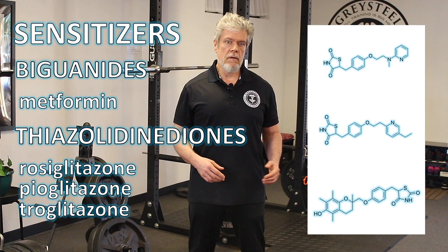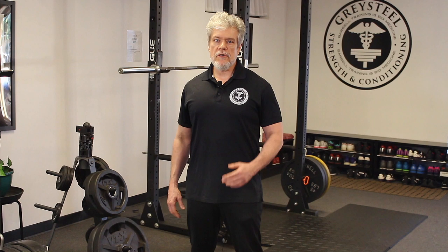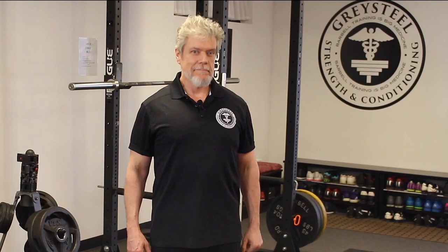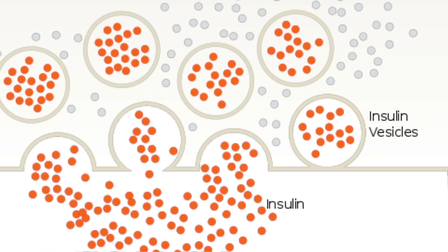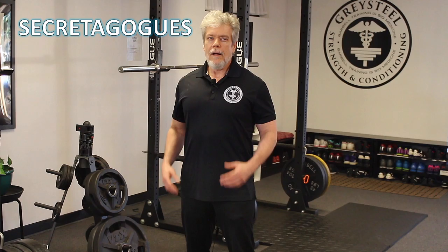Next we come to the secretagogues — medications that tell the weary, overworked beta cells in your pancreas that they need to make more insulin. There are two main subclasses, and they both work at the level of the beta cell by essentially poisoning the potassium transporter in the beta cell membrane, which affects the voltage across the membrane, which in turn allows calcium to rush in — the final signal for insulin release into the bloodstream.